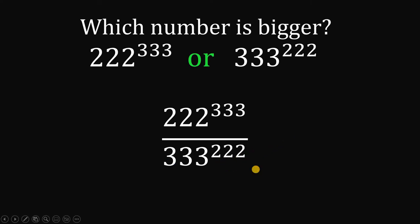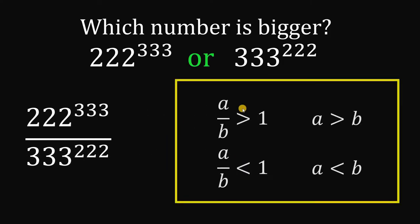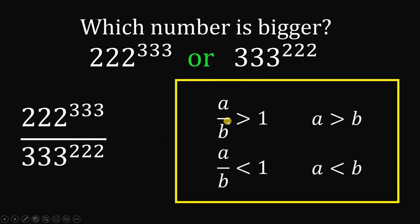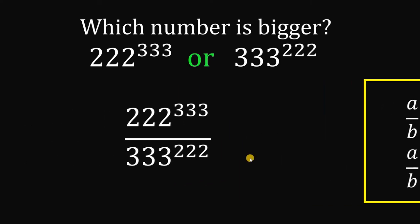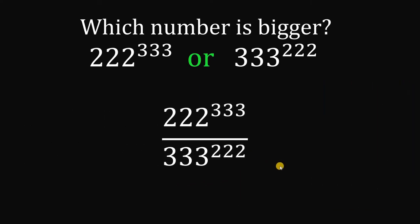We will use this simple concept to justify our answer. If a over b is greater than 1, it follows that a must be greater than b. Also, if a over b is less than 1, it follows that a must be less than b. We will use this concept to answer this question.